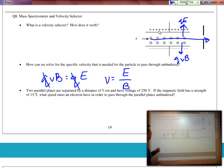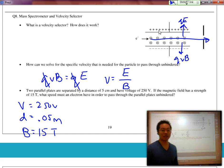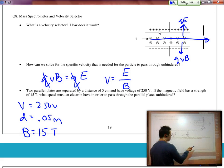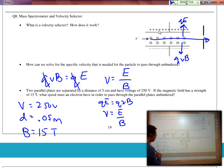So when two parallel plates are separated by a distance of 5 centimeters and have a voltage of 250 volts. Okay, let's take a look at our information. The potential difference is 250 volts. The distance between the plates is 0.05 meters. Now, they mentioned that the magnetic field is 15 Teslas. They asked what speed does the electron have to have in order to pass through the parallel plates unhindered? Now, the formula here is simply knowing that QE is equal to QVB. Therefore, V is equal to E divided by B. We have the magnetic field.